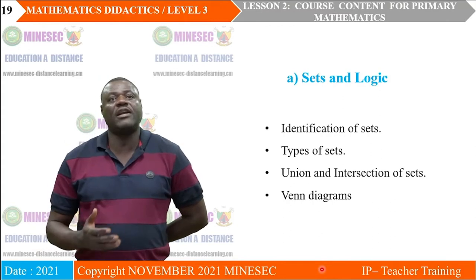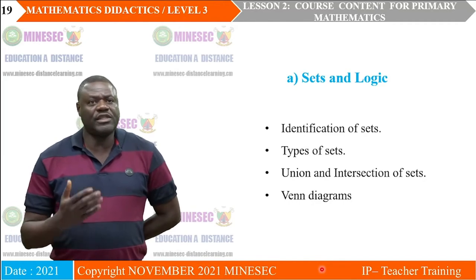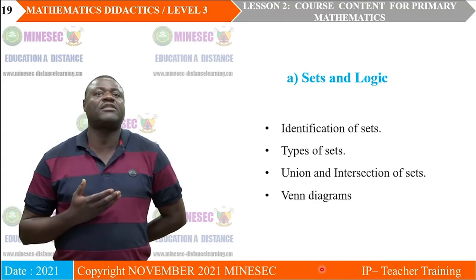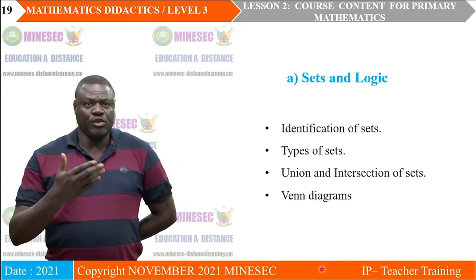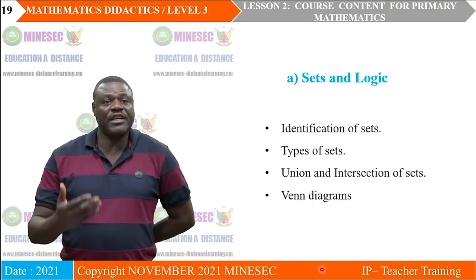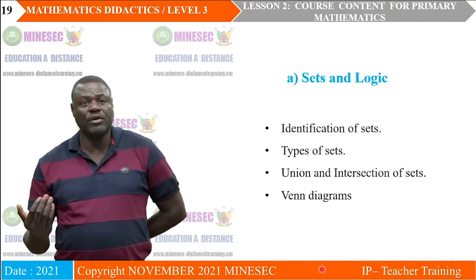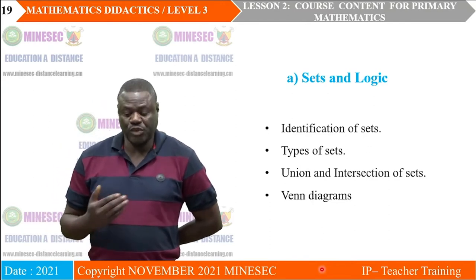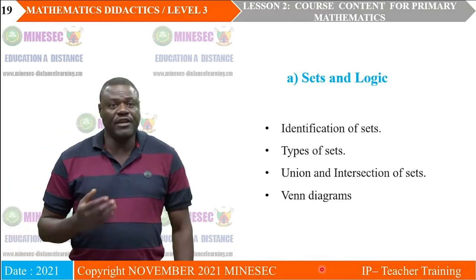Let us look at the components in detail. The first component is sets and logic. The content includes identification of sets — children should be able to identify sets and name them, differentiate between different types of sets, combine sets to come up with union and intersection of sets, and represent sets in diagrams known as Venn diagrams.